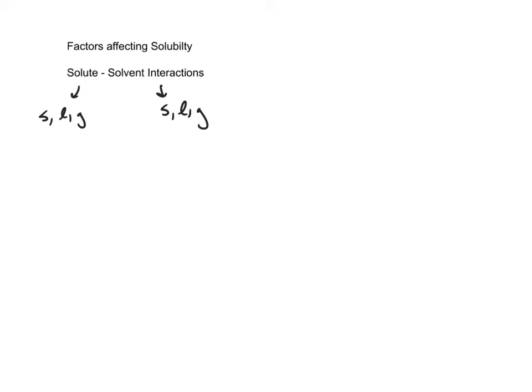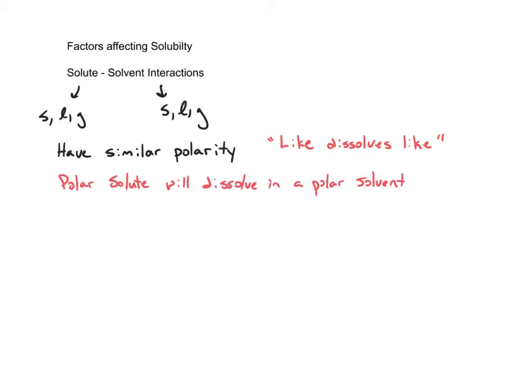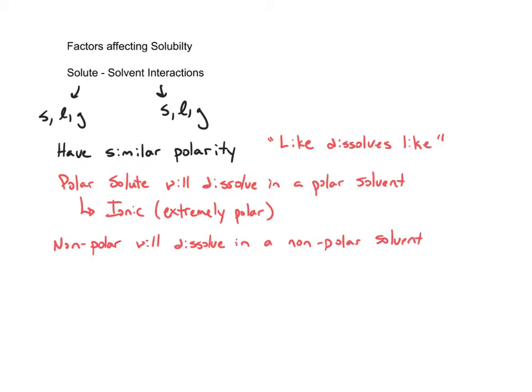The first thing we're going to talk about is solute-solvent interactions. In order for a solute to dissolve in a solvent, first and foremost, they have to have similar polarity. You might have heard the term before: like dissolves like. What that means is that something that's polar will only dissolve in a polar solvent. That includes ionic solutes as well — ionic is just an extreme polar situation. So polar and ionic will dissolve in a polar solvent. The same is true with nonpolar dissolving in nonpolar.